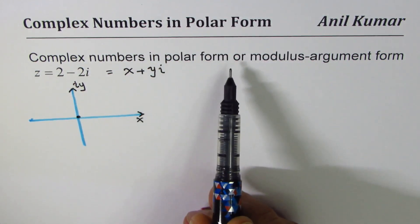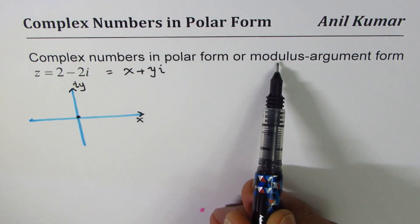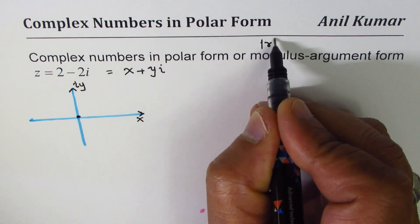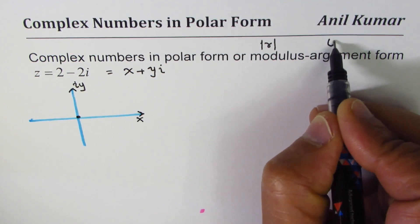When we want to represent this in polar form we are talking about two things: one is the modulus, the other one is the argument. Modulus is positive value, the distance from the pole, from the center. In this case, argument is the angle of rotation.